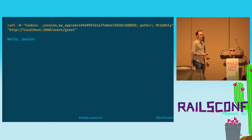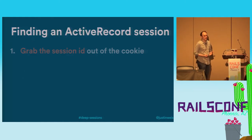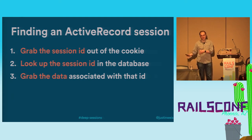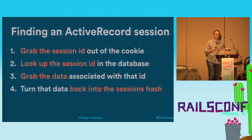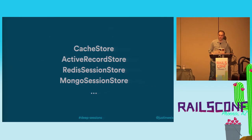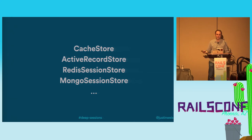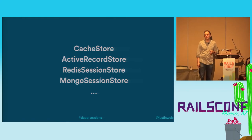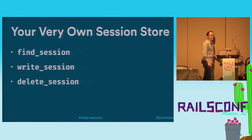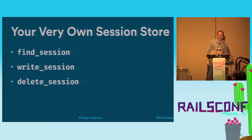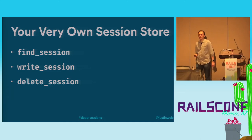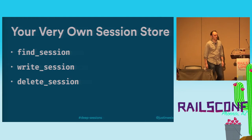You can even store sessions in Memcache, Redis, and MongoDB, or pretty much anywhere else — they all follow the same process: your cookie is just a session ID, and your app uses that ID to look up the rest of the information. You can even write your own session store — you just need to tell Rack how to find sessions, create new sessions, write session data, and delete sessions by implementing a couple of methods. Rails even includes a simple cache store that's a really good example to follow if you're interested. I'll have a link to that in the notes.